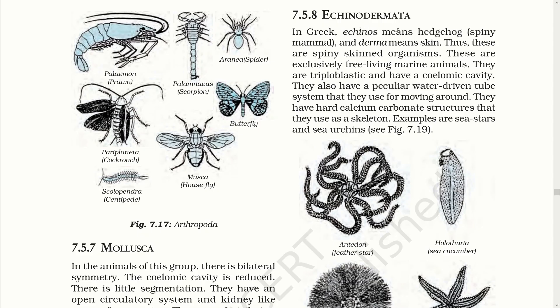Then we have Echinodermata. In Greek, echinos means hedgehog — a spiny mammal — and derma means skin. Thus, these are spiny-skinned organisms. These are exclusively free-living marine animals. They are triploblastic and have a coelomic cavity. They also have a peculiar water-driven tube system used for moving around. They have hard calcium carbonate structures used as a skeleton. Examples are sea stars and sea urchins.